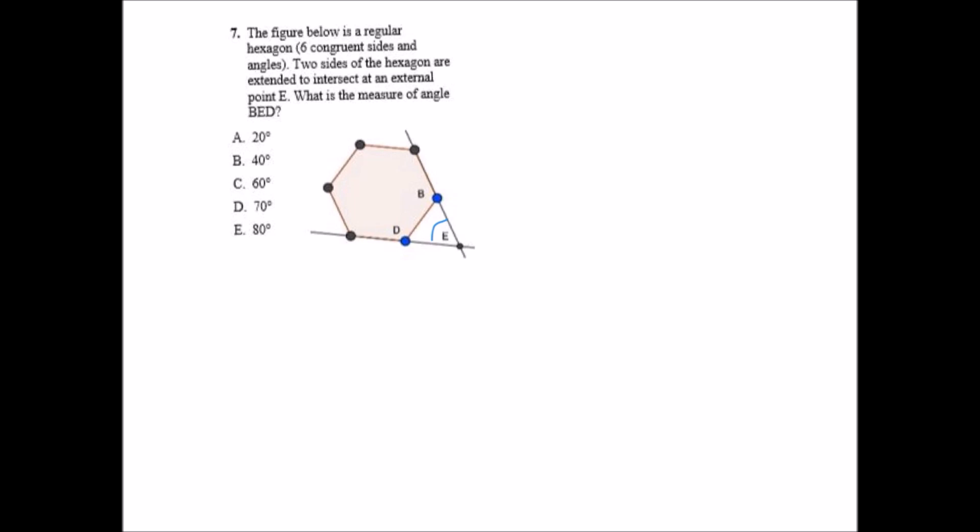So what we're trying to do is solve for the measure of this angle right here. You can use the formula 180 times n minus 2 all over n to find the measure of the angles inside the hexagon. In this case n is the total sides, which is 6. So this would be 180 times 6 minus 2 is 4 divided by 6 equals 720 divided by 6, which is 120.